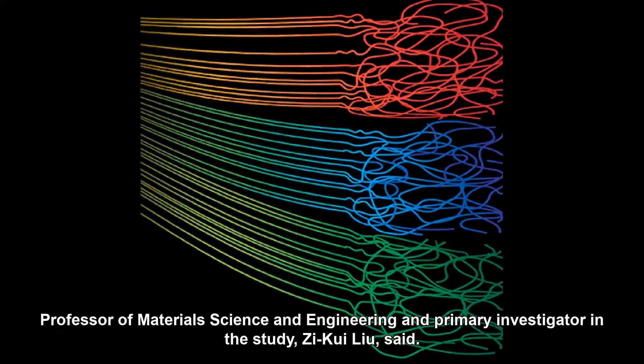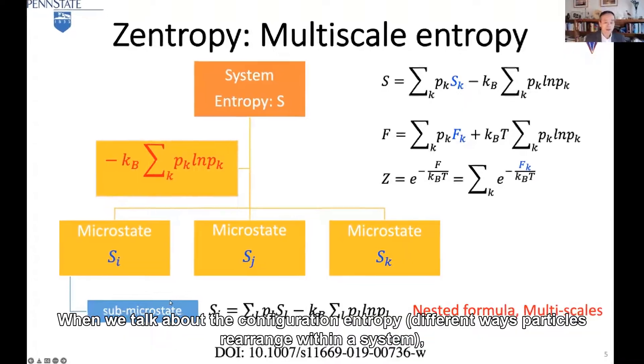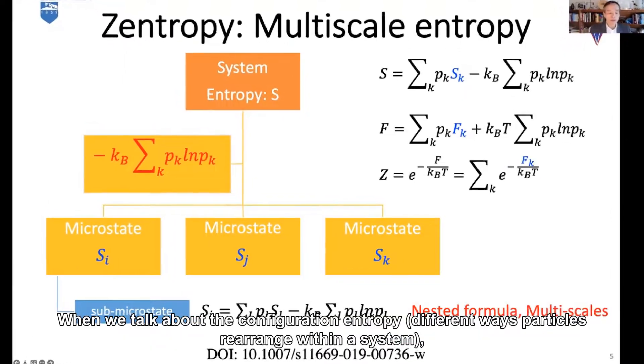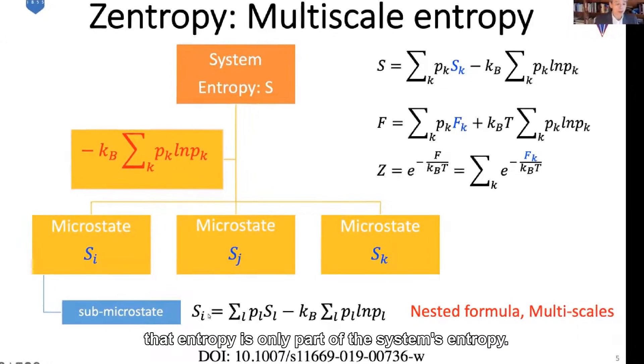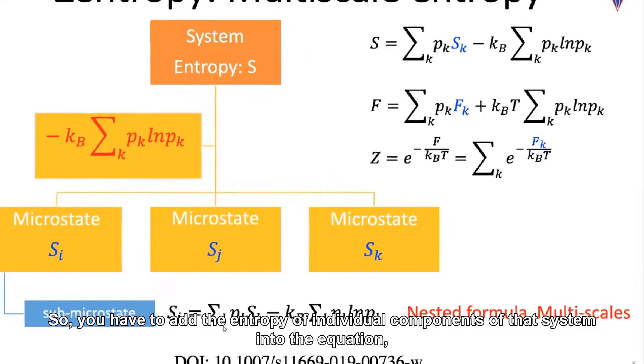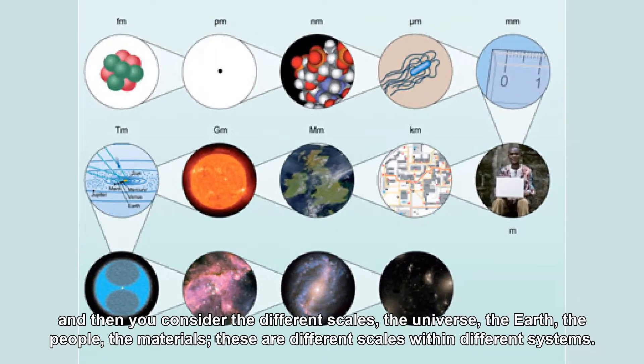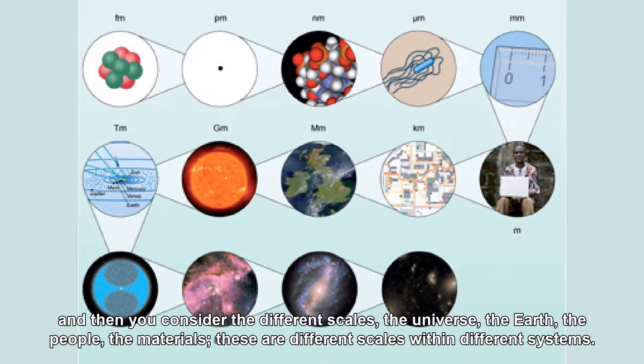Professor of Materials Science and Engineering and primary investigator in the study, Zi-Kui Liu, said: 'When we talk about the configuration entropy, different ways particles rearrange within a system, that entropy is only part of the system's entropy. So you have to add the entropy of individual components of that system into the equation, and then you consider the different scales—the universe, the Earth, the people, the materials. These are different scales within different systems.'